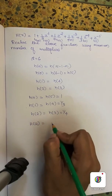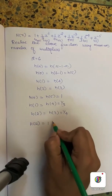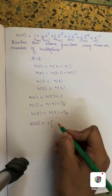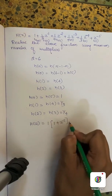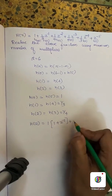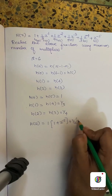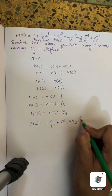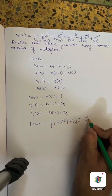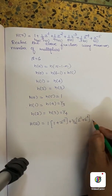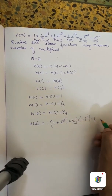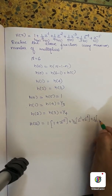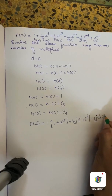The symmetry conditions satisfied are: h(0) equal to h(5) equal to 1, h(1) equal to h(4) equal to 1/3, h(2) equal to h(3) equal to 1/4. Therefore H(z) equals 1 into (1 plus z raised to minus 5), plus 1/3 into (z raised to minus 1 plus z raised to minus 4), plus 1/4 into (z raised to minus 2 plus z raised to minus 3).